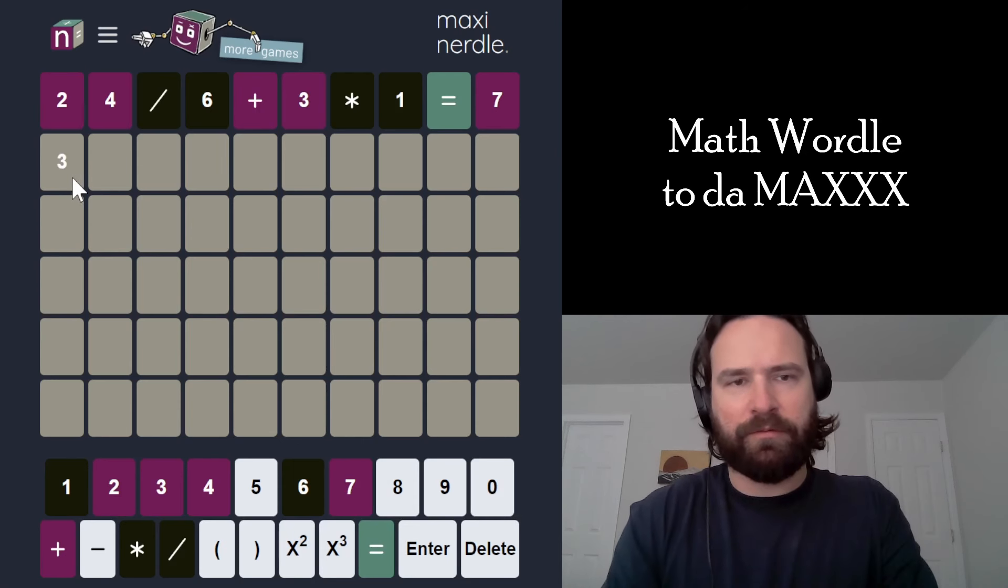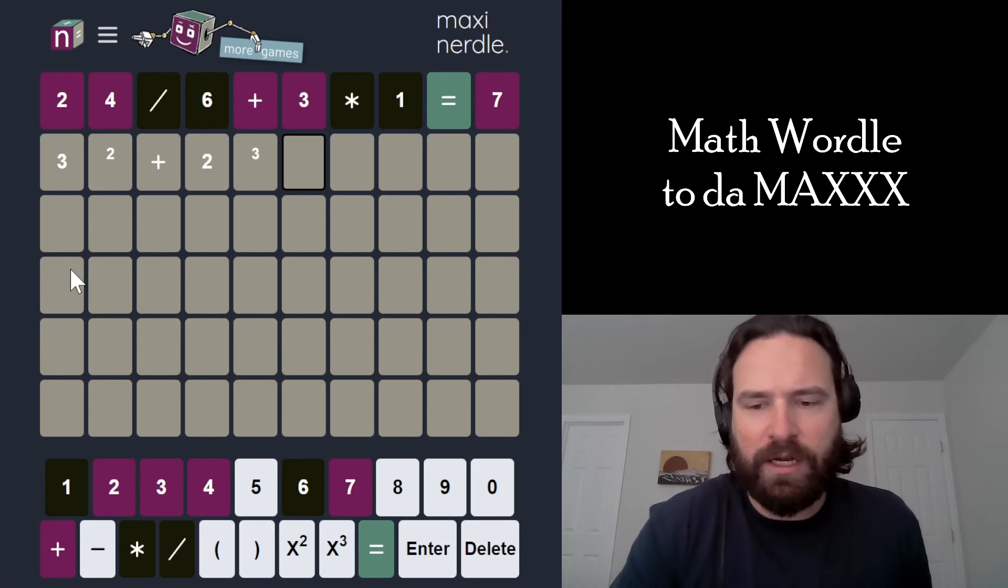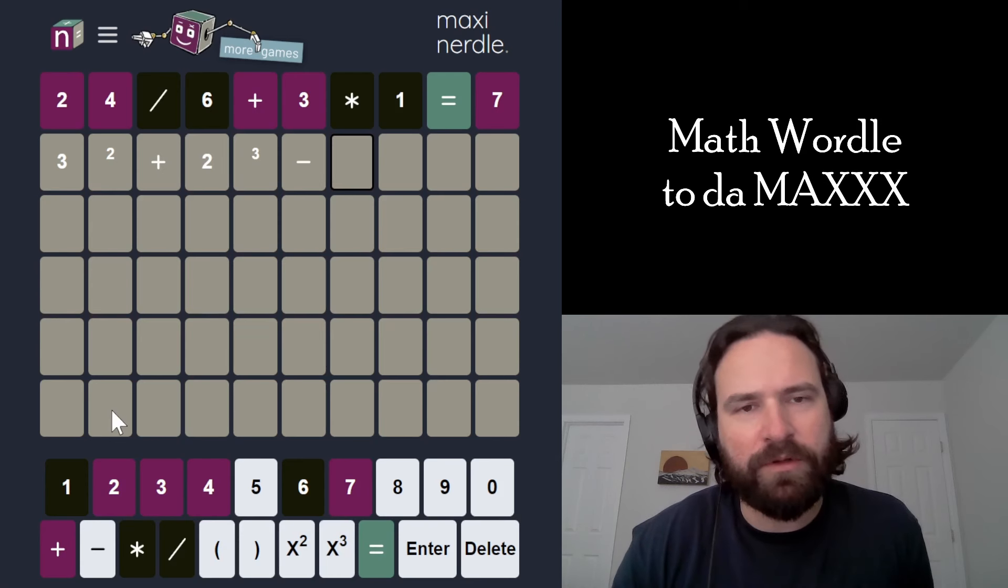Let's just do like 3 squared plus 2 cubed just to get both exponents in. And now I can subtract a double-digit number. There's no 1, so maybe this doesn't work that well.